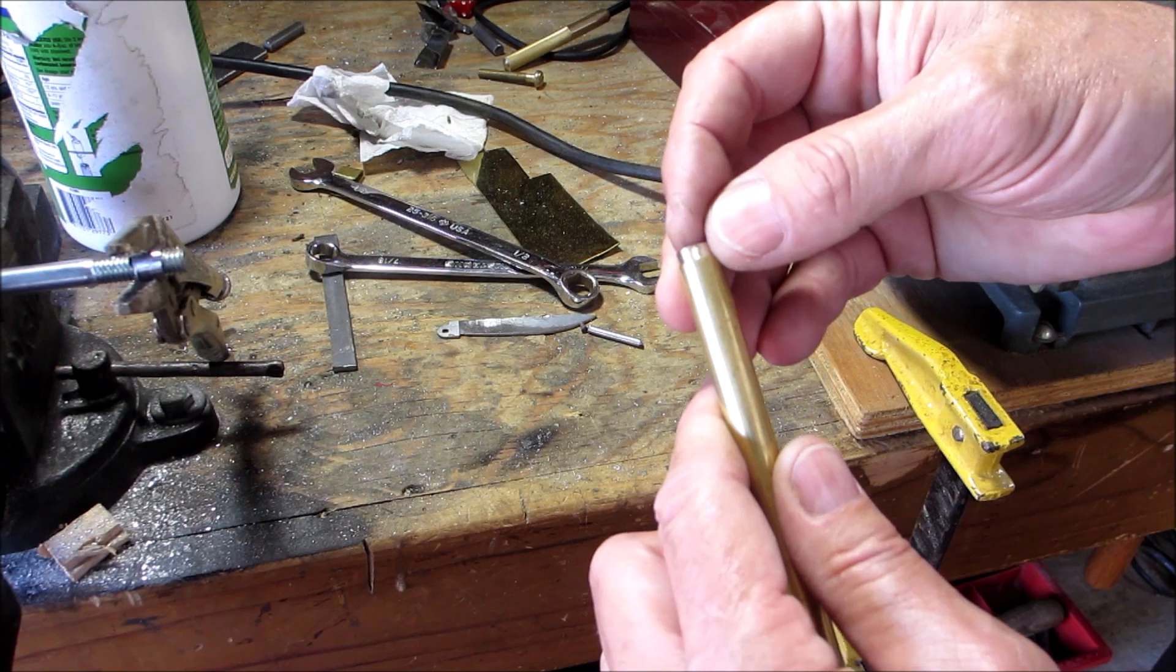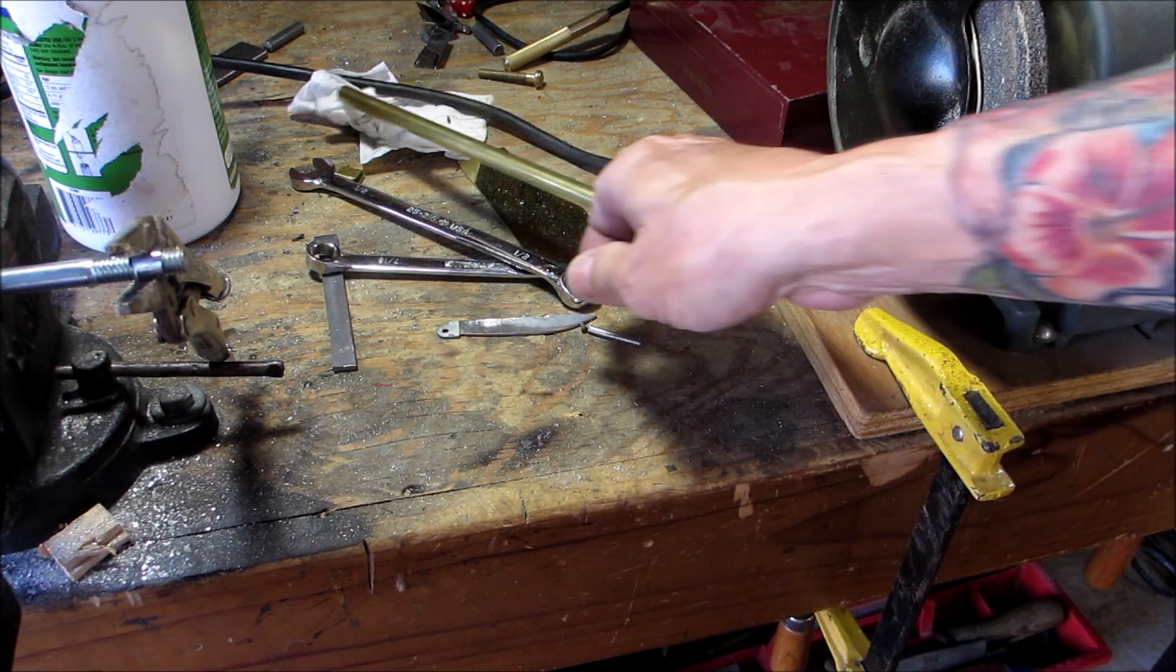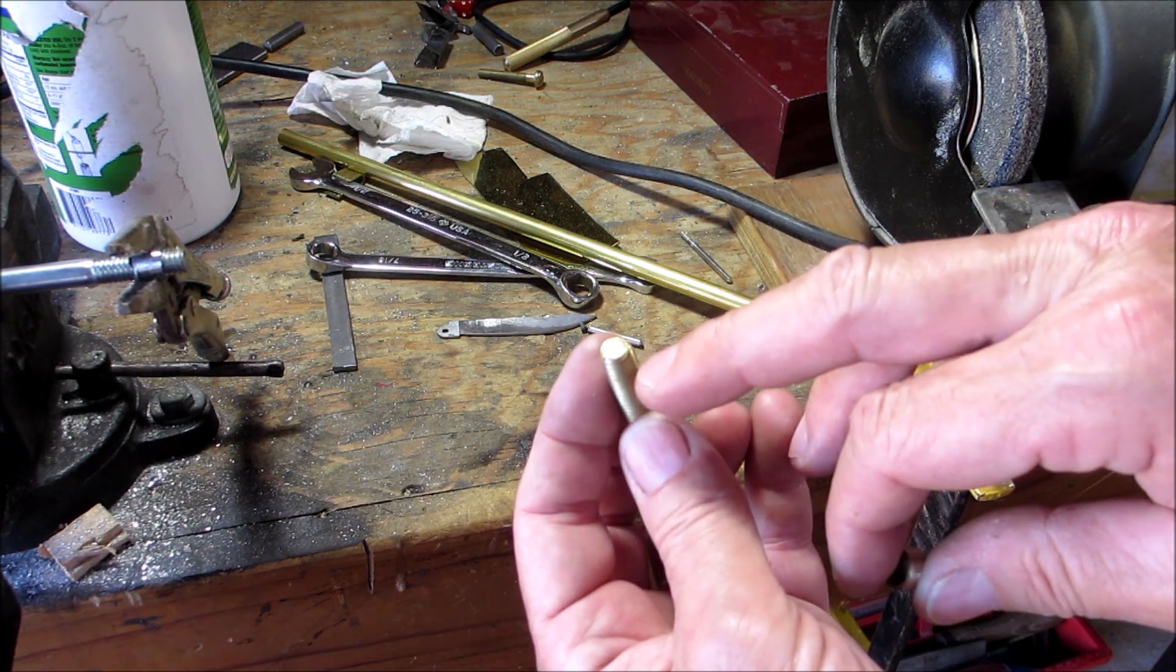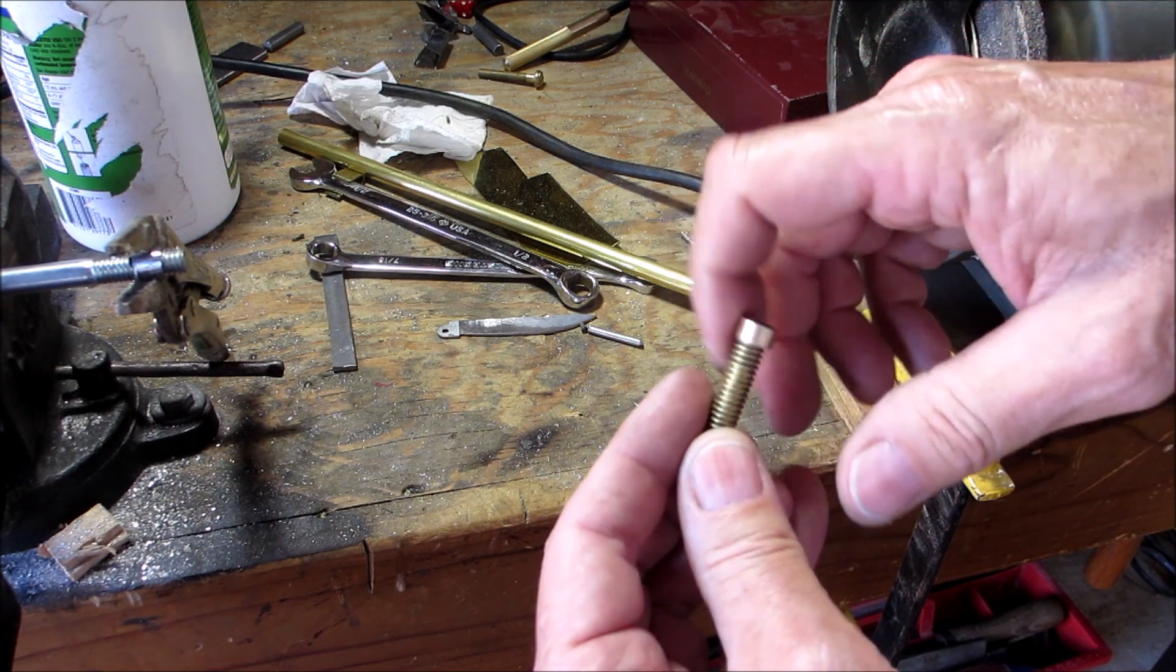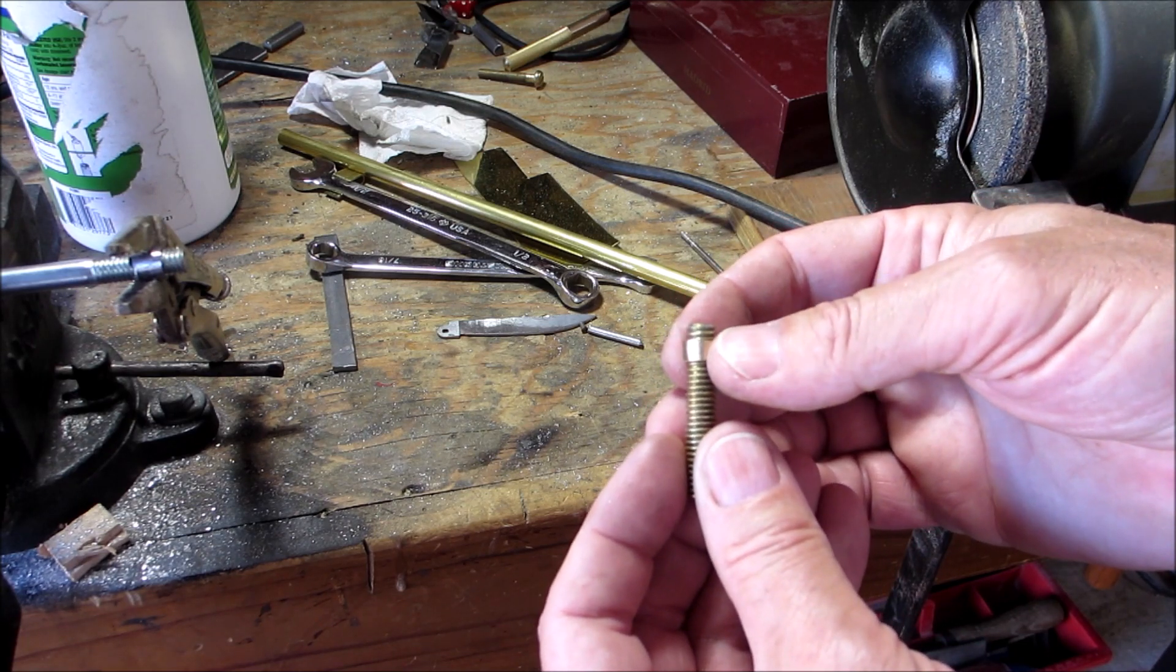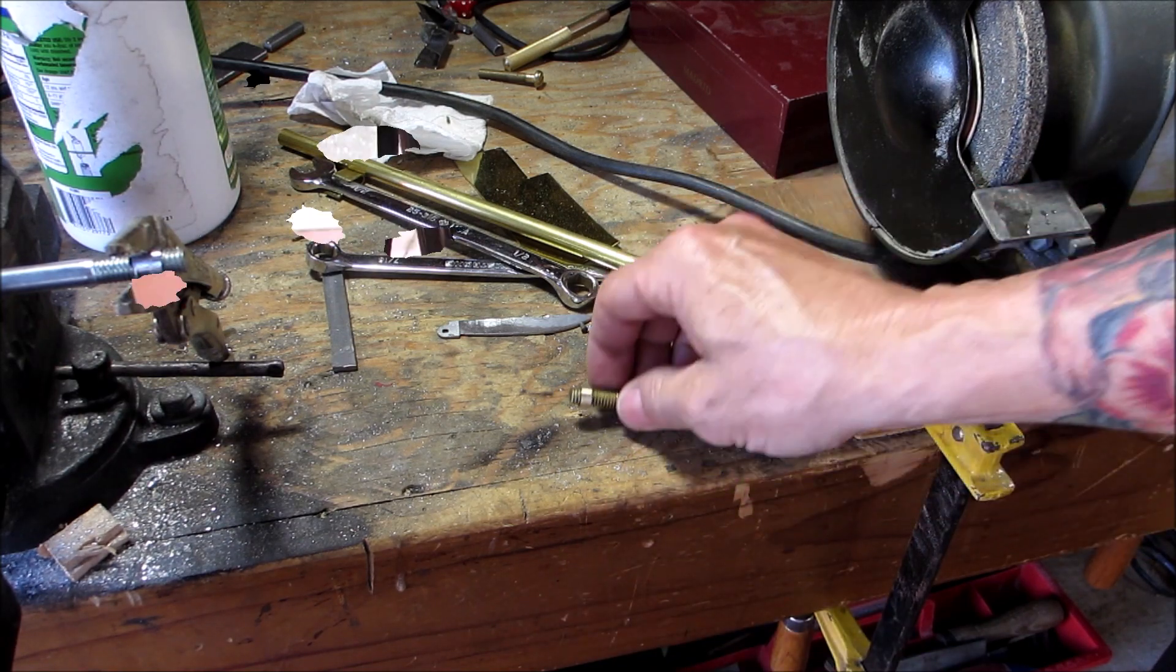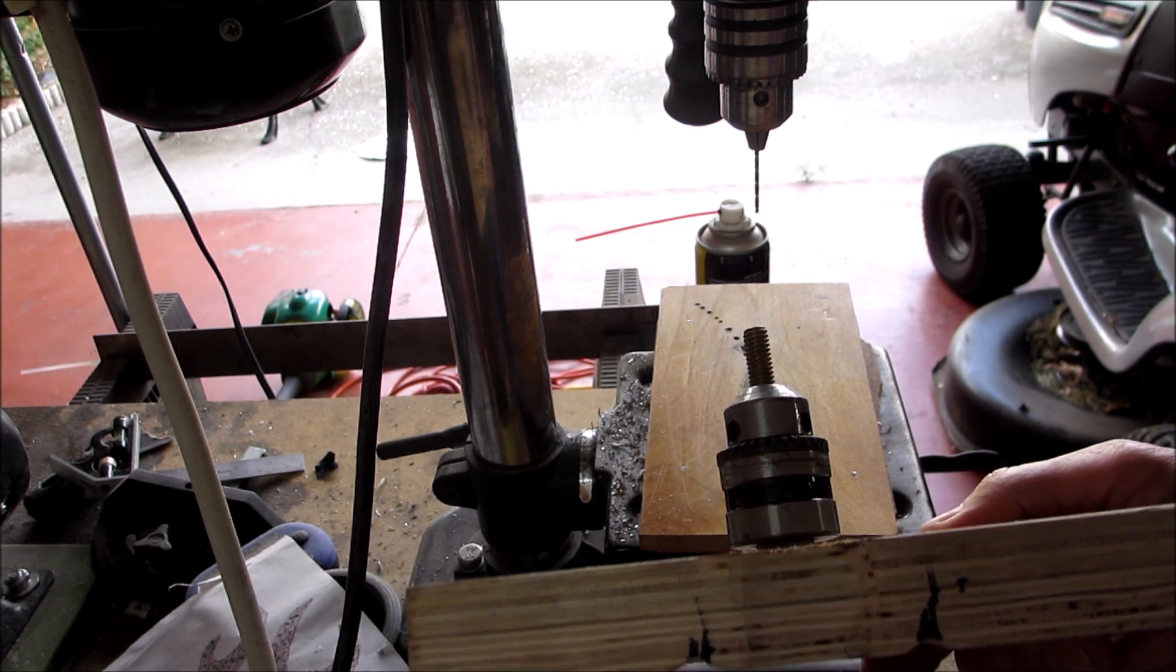Next thing we have to do is drill a hole to accept the wick in here, and then we'll cut this off at the length that we want, however much we want it to stick up. So we're going to drill the hole first and then we'll cut that off. So let me set up on the drill press. All right, so I have the stud in my little jig that holds it and I'm going to drill the hole right down the middle.